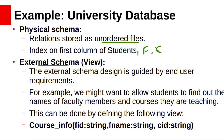The external schema will be different for different users. For example, if you want to find the names of faculty members and the courses they are teaching, this can be done by defining a view — for instance, a view called 'course information' containing faculty ID, faculty name, and the ID of the course they are teaching.